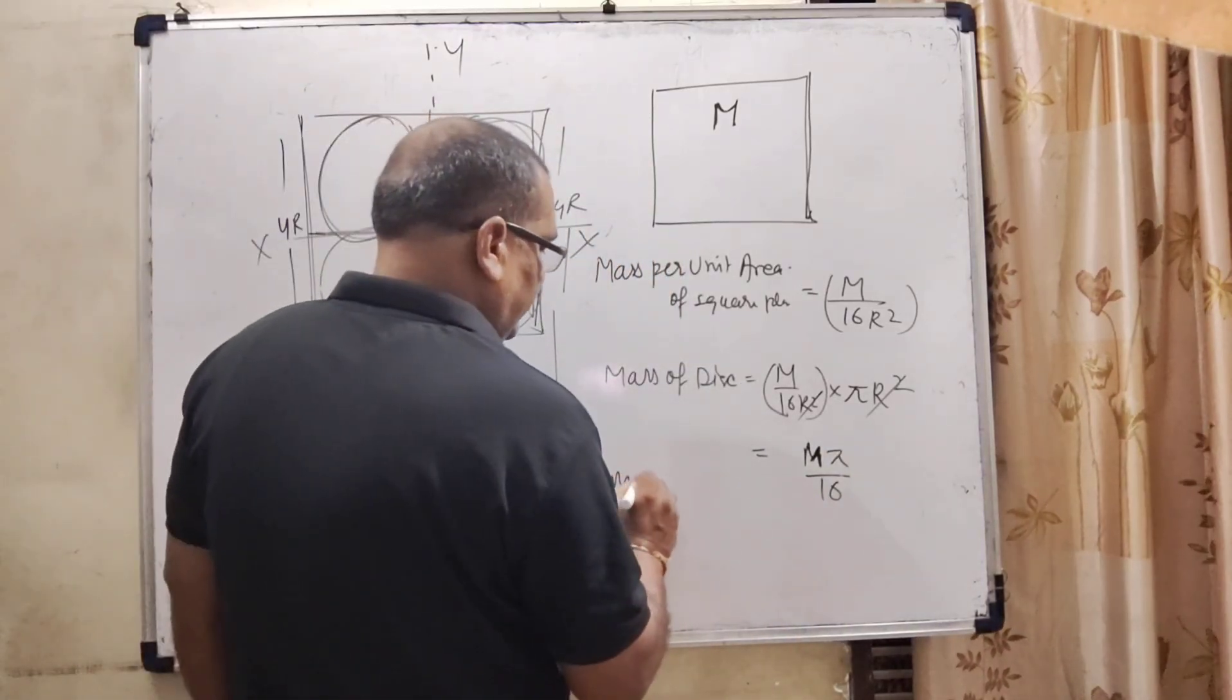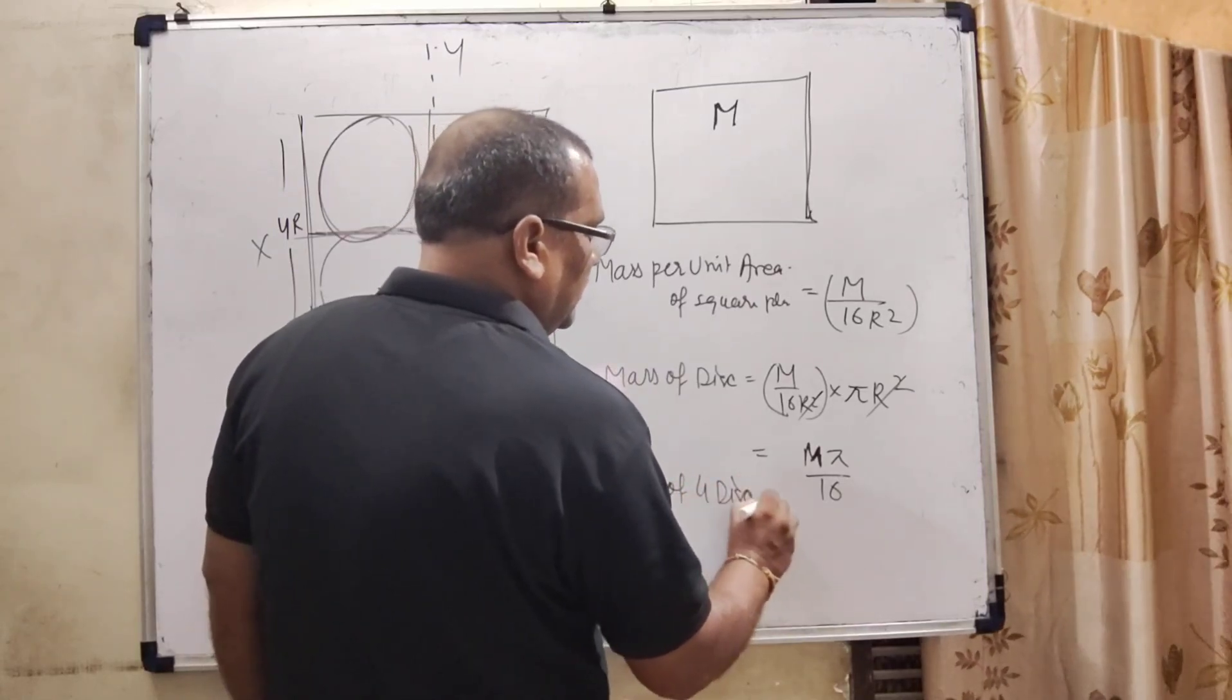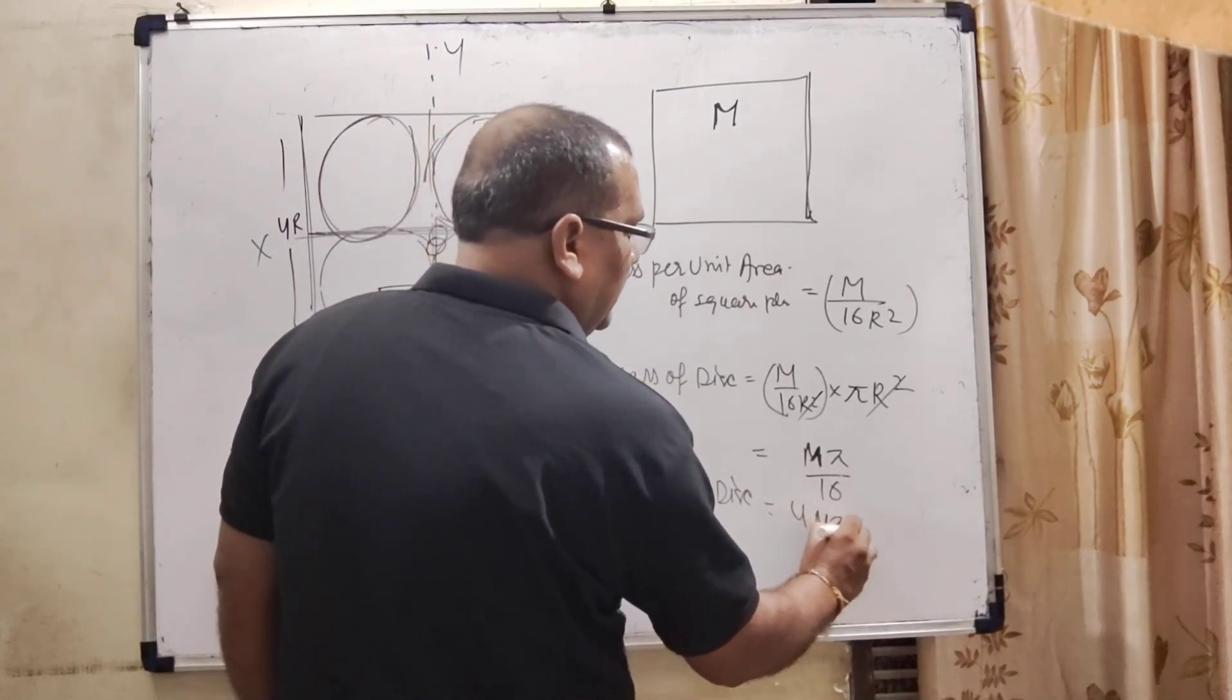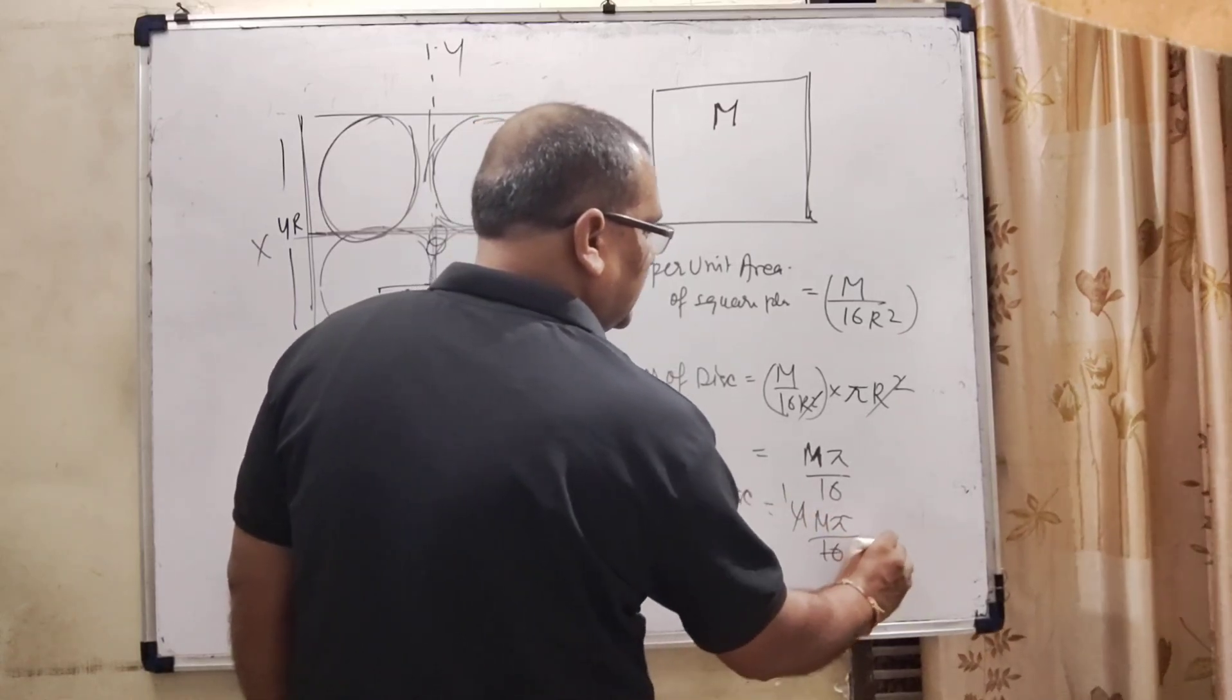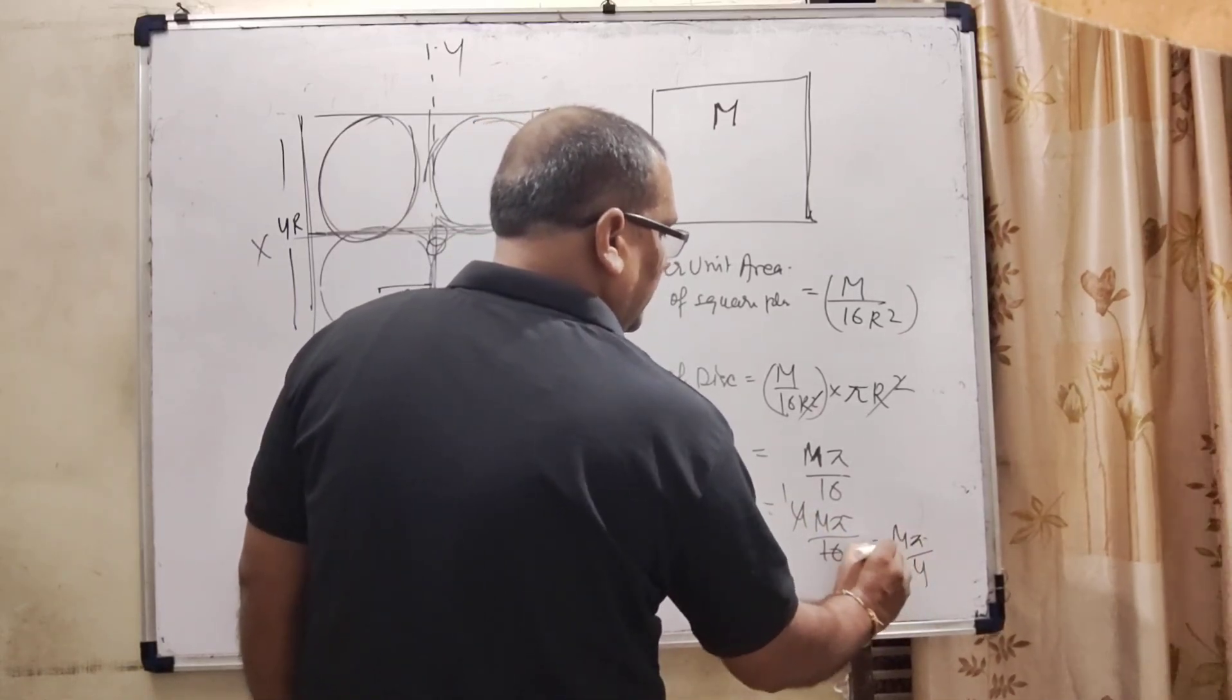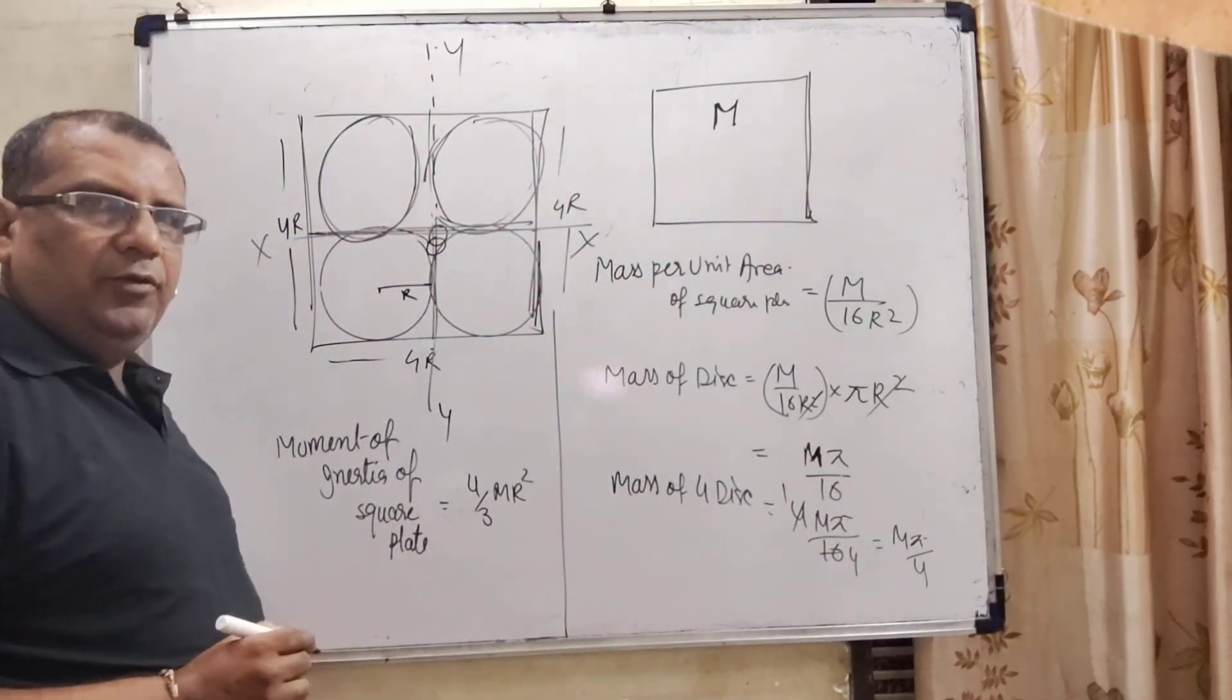Then mass of 4 discs: 4 times M pi by 16. 4 into 1 is 4, 4 into 4 is 16. M pi by 4. We get mass of 4 discs as M pi by 4.